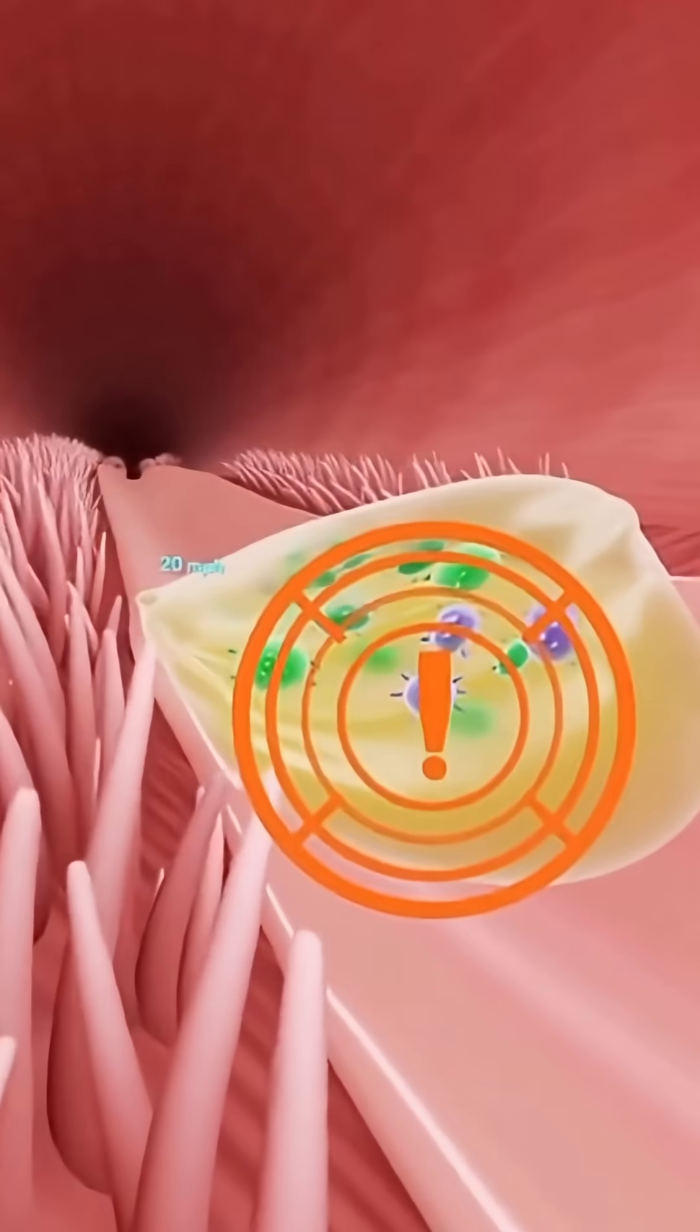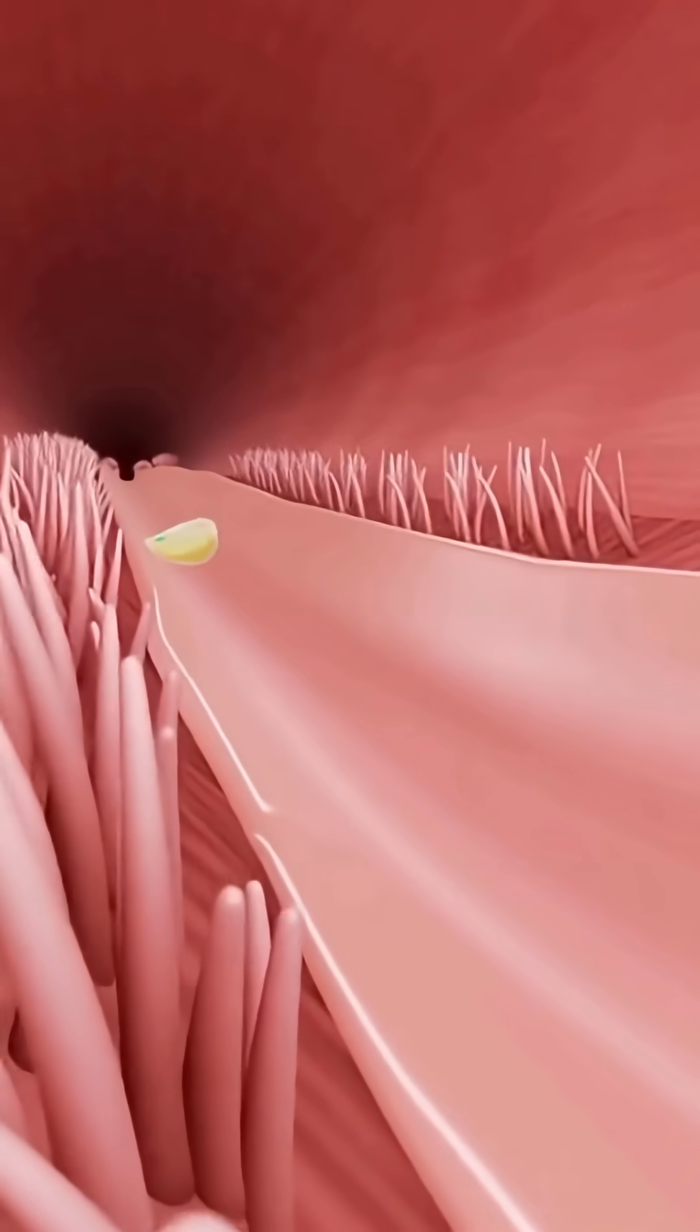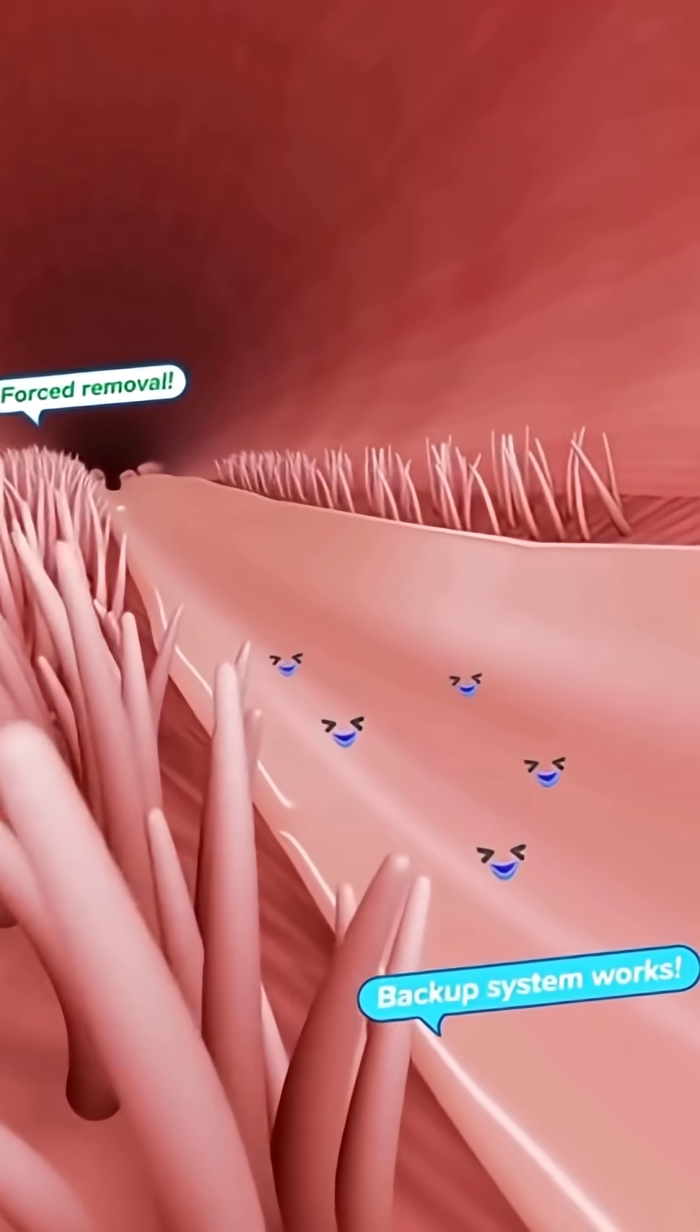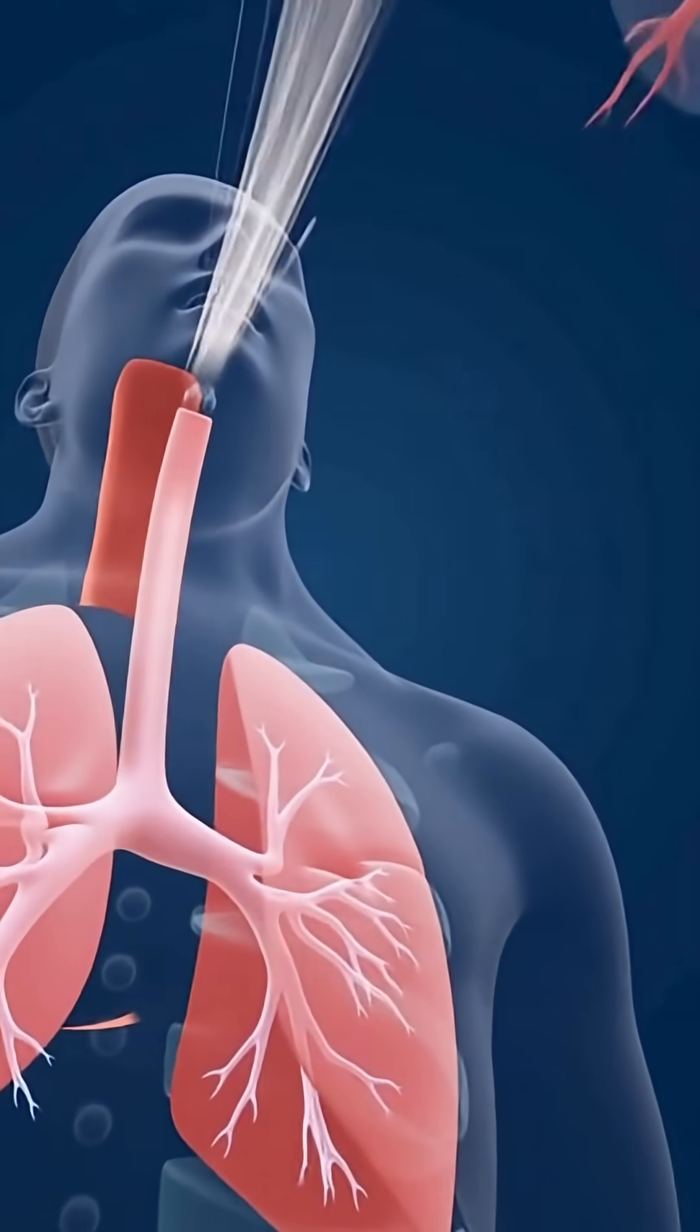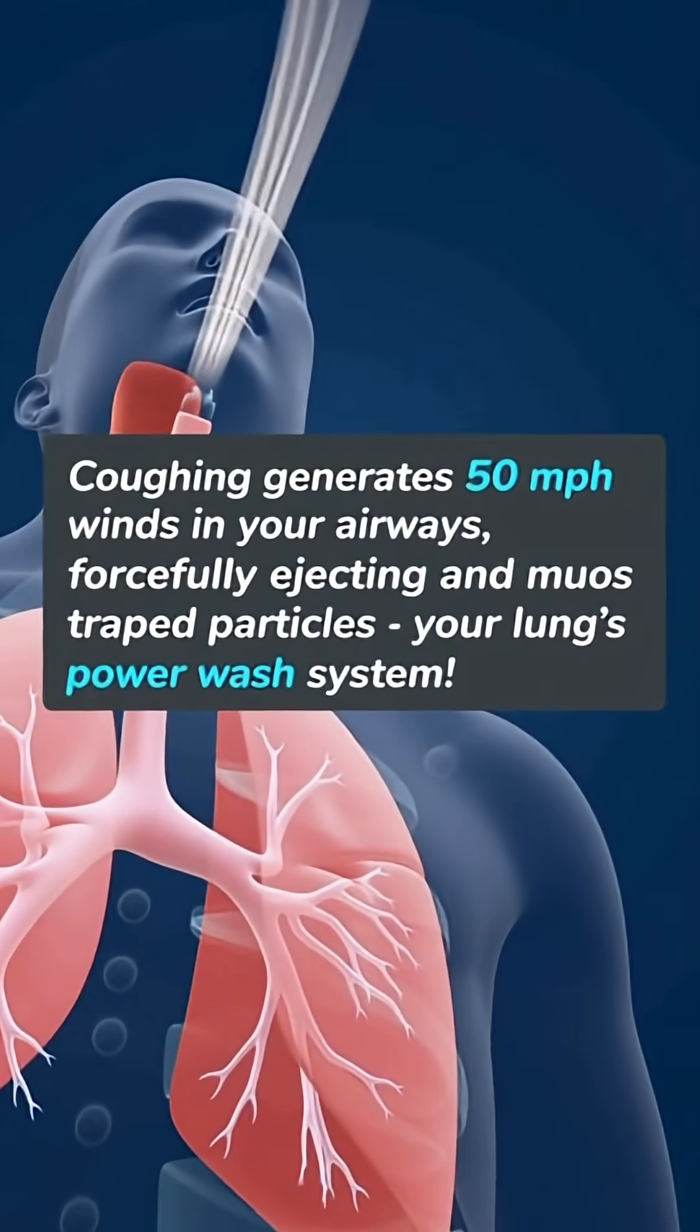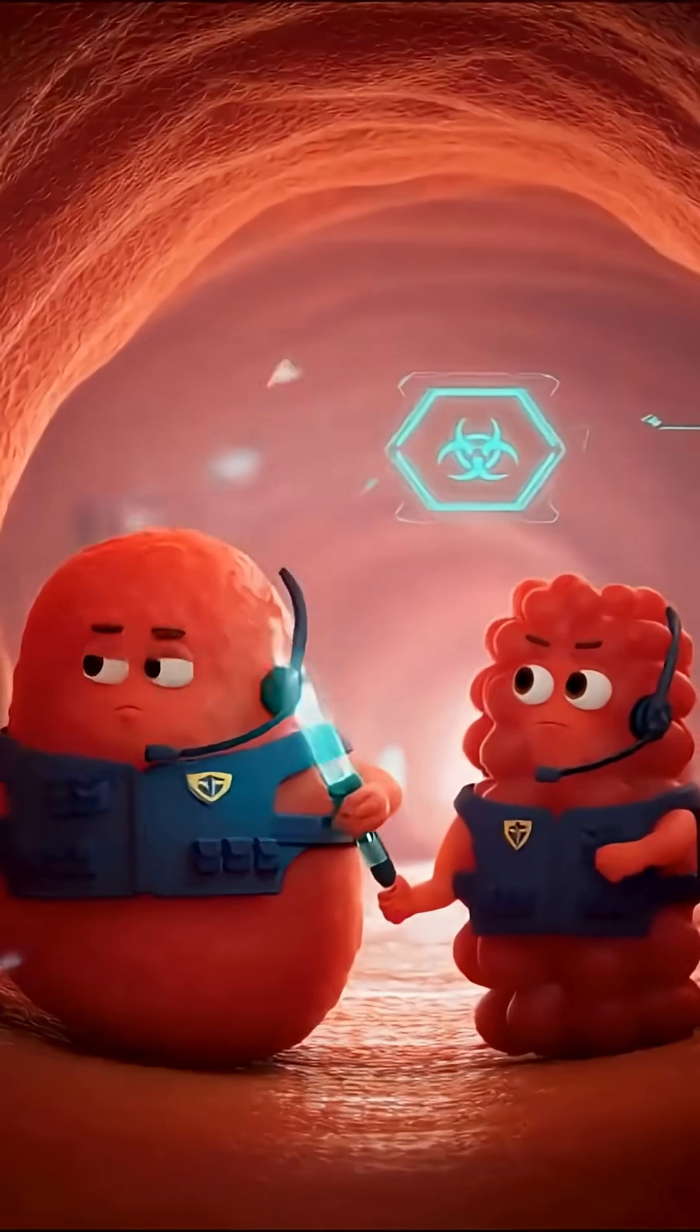Sneezing is debris alert. Muscles contracting. Now! Air velocity climbing 50 miles per hour. Forced removal! Whoa! Backup system works! Coughing generates 50 mile per hour winds in your airways.